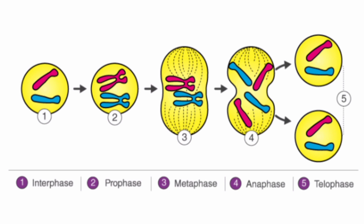During Metaphase, a structure called the spindle forms. The spindle is made of protein fibers. The chromosomes line up at the equator of the spindle and attach to it by their centromeres.